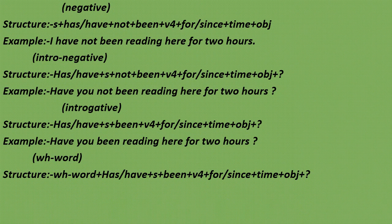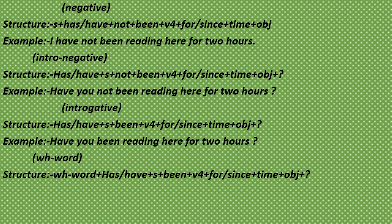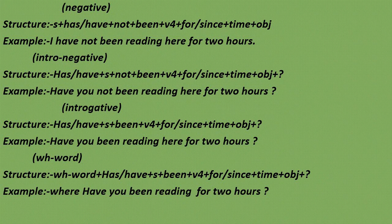The WH-interrogative structure is: WH-word + has/have + Subject + been + V1-ing + for/since + time + Object. Example: Where have you been reading for two hours? (तुम कहाँ दो घंटों से पढ़ रहे हो?) Thank you — please subscribe to the channel and share the video.